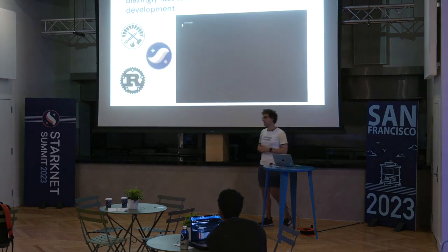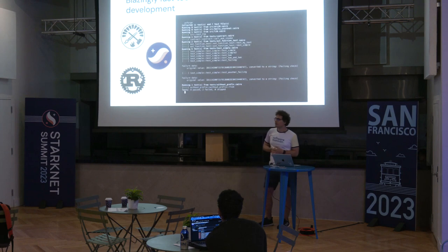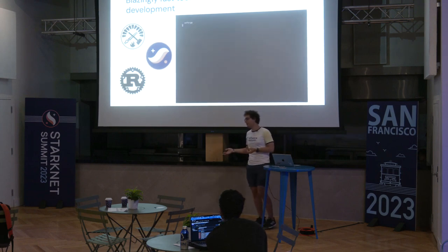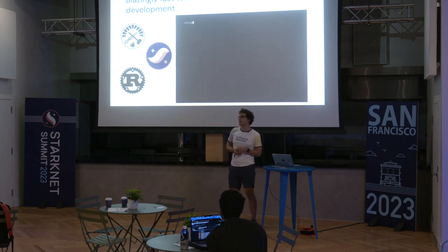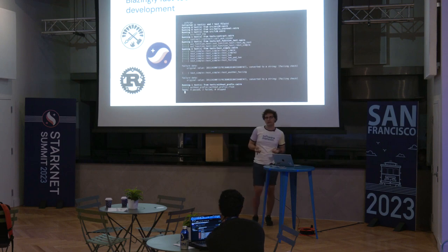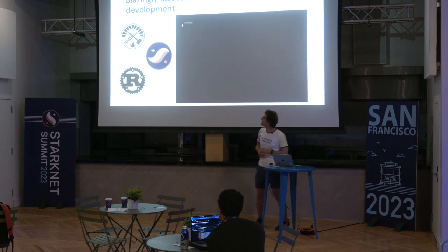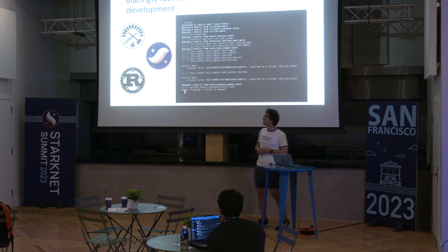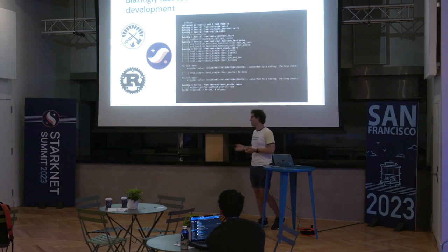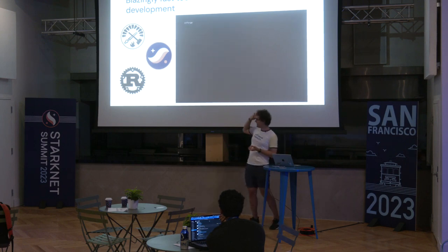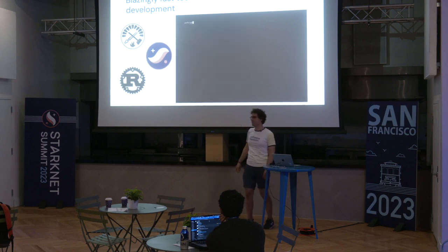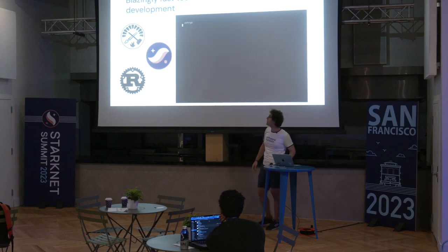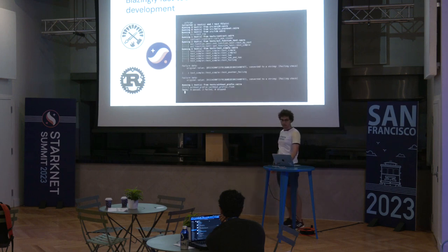So what is Starknet Foundry? Starknet Foundry is an implementation of Ethereum Foundry on Starknet. Basically, it's a tool for testing and developing Starknet contracts, and the goal is to make it fast. It's a collaboration between Foundry, Starknet, and everything is sprinkled with Rust. It works very fast and it's actively developed.